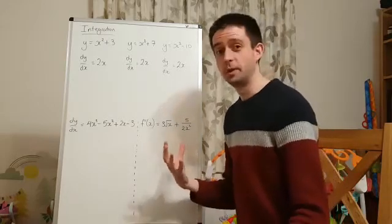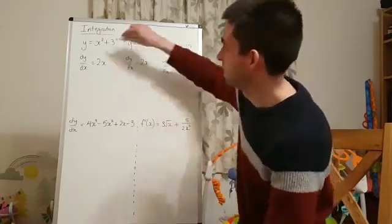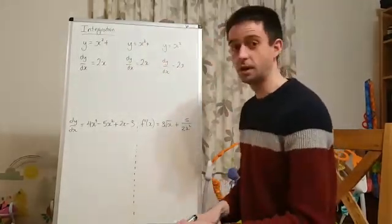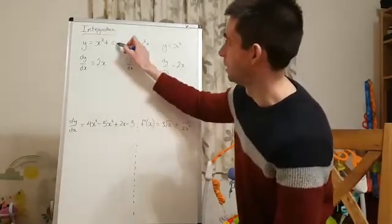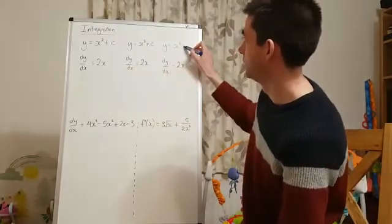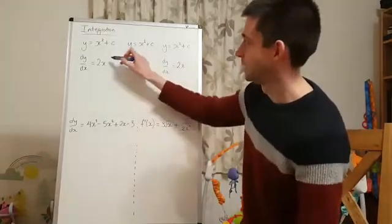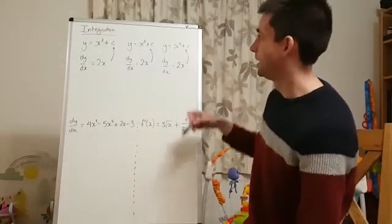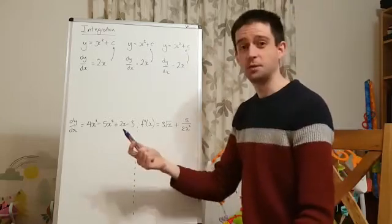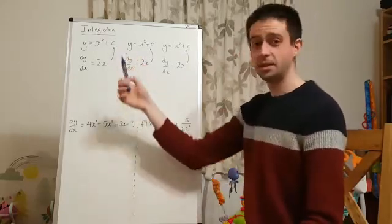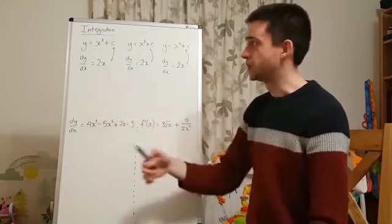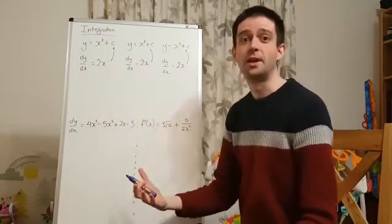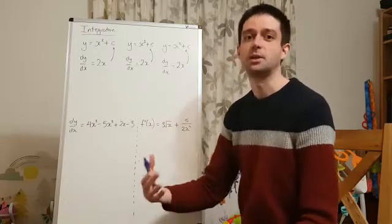So the first key principle of integration is when you integrate, you get what is known as a constant of integration, which we just write plus c. So if you're integrating, you always get a plus c, because this allows for the fact that if you differentiate numbers, you go to zero, so when you're integrating you always get a plus c on the end. And with extra information, you can find out what that plus c is as a number. That's coming up in lesson two.